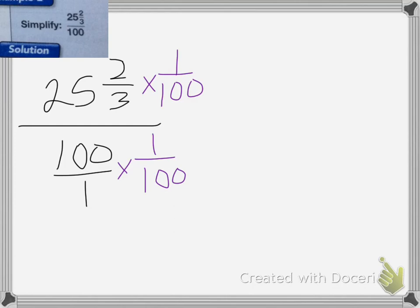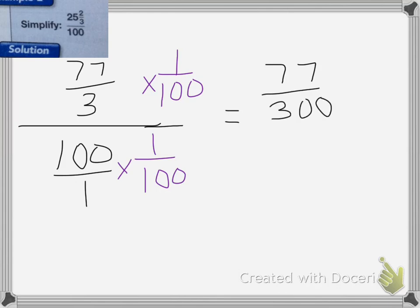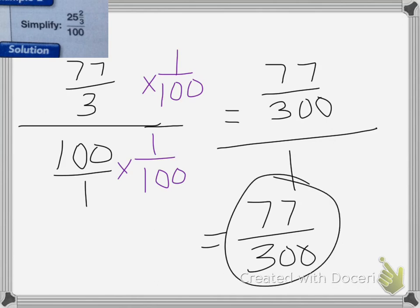So I need to change 25 and 2 thirds into an improper fraction, which is equal to 77 thirds. Now I can go ahead and multiply. So I end up with 77 over 300, 77 three hundredths over 1, which is equal to 77 three hundredths. That number does not reduce.